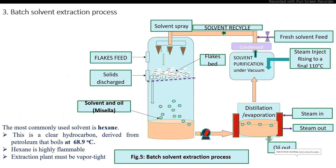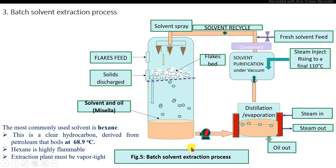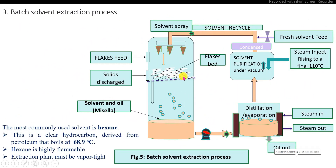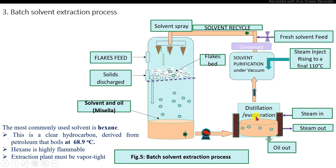In the batch solvent extraction process, this extractor operates batch-wise as a single-stage extractor. It is provided with a perforated bottom base, on which a bed of oil seed flakes is formed. There is provision for a feeding, loading, and unloading system. Pre-processed oil seed flakes are loaded as a bed, then fresh solvent is continuously sprayed on top. The extract collected at the bottom contains solvent plus oil, which is separated by evaporation using an external jacket or heat exchanger.